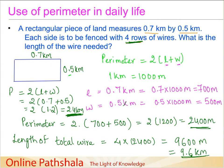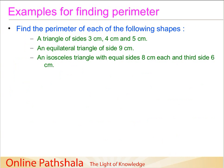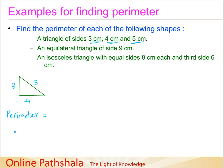This is another example of using the concept of perimeter in daily life. Now let us find the perimeters for some shapes. First, we have a triangle with sides 3 centimeters, 4 centimeters, and 5 centimeters. Drawing this triangle and labeling the sides: 3 cm, 4 cm, and 5 cm. The perimeter equals 3 plus 4 plus 5. Since 3 plus 4 is 7, and 7 plus 5 is 12, the perimeter is 12 centimeters.